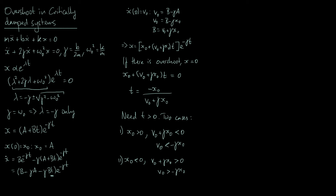There's also the possibility that x₀ = 0, but then the only solution for t is t = 0 — so if you start at the equilibrium position, the system won't come back through equilibrium. To get overshoot, you need one of the two cases above to be satisfied.